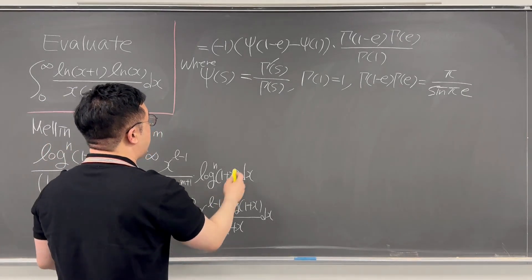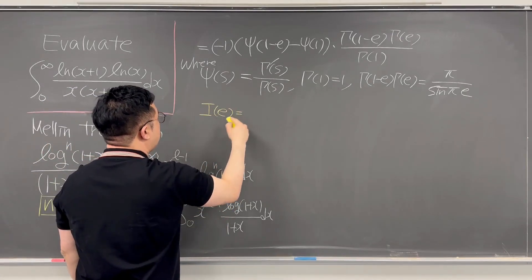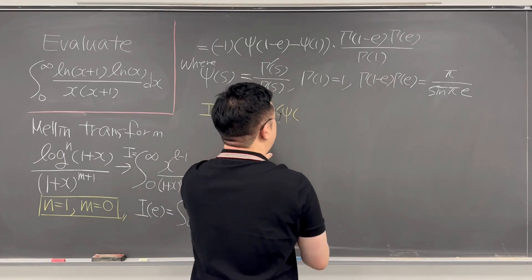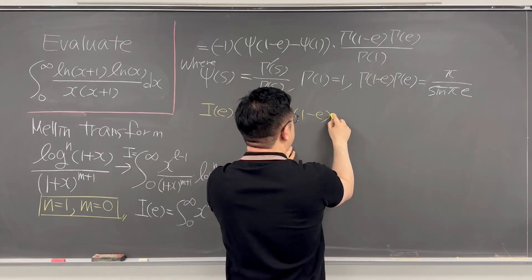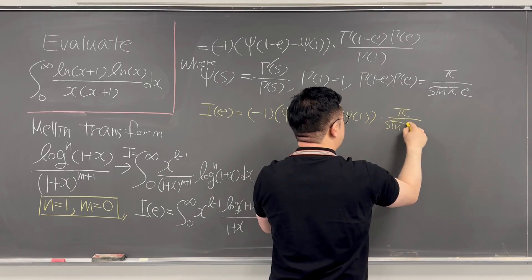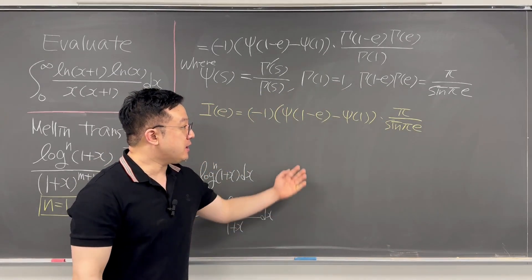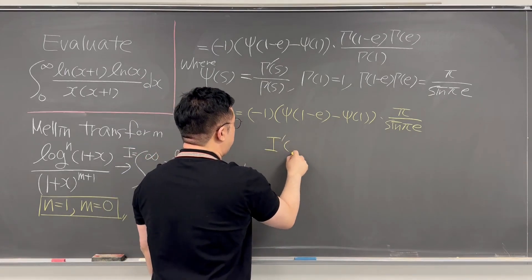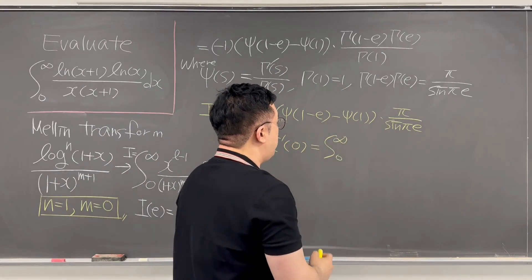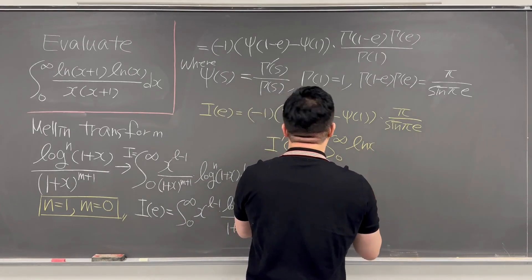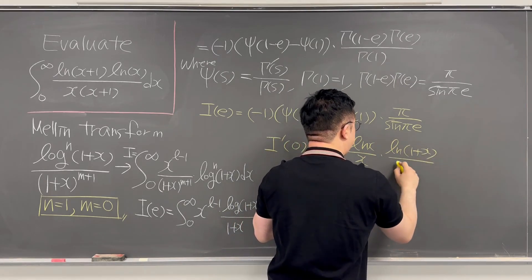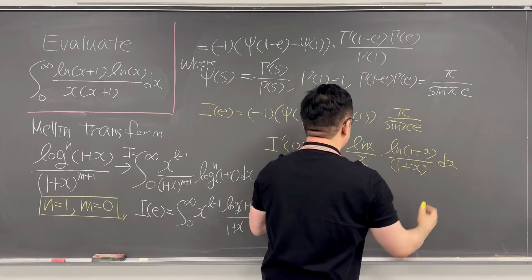So if you rewrite I(e), it has to be negative of (psi(1-e) minus psi(1)) times pi over sin(pi·e). What we want to compute is I'(0), which is the same as the integral from 0 to infinity of ln(x) over x times ln(1+x) over (1+x) dx.